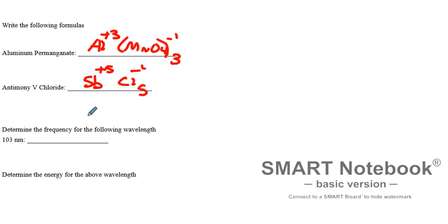Okay, now we're on to some quantum mechanics. Determine frequency for the following wavelength. We have 103 nanometers. Remember, what's nu? Nu is c over lambda. So we're going to take c, which is 3 exponential 8. We'll divide that by 103 exponential minus 9.